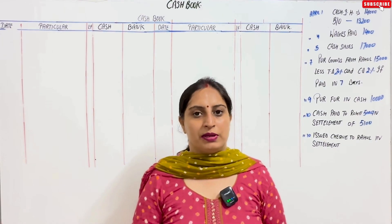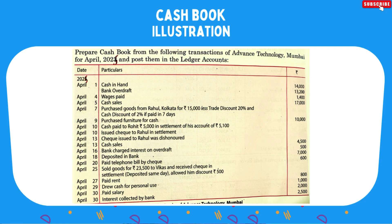We will read the question and go through it on screen. Prepare cash book for Advanced Technology, Mumbai, April 2025, and post them into a ledger account. When you have a cash book, you typically don't need a separate ledger account — we will explain what to do. The question date and all information are noted on the board. This is the April 2025 cash book.